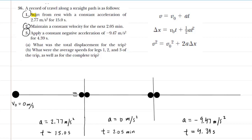In segment one, the object starts from rest, so the initial velocity is 0 meters per second. It has a constant acceleration of 2.77 meters per second squared, and it travels for 15 seconds.